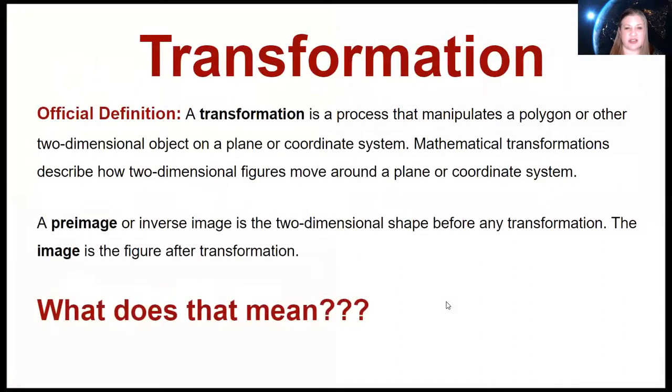So let's dig into a definition. The official definition of a transformation is a process that manipulates a polygon or other two-dimensional object on a plane or coordinate system. Mathematical transformations describe how two-dimensional figures move around a plane or coordinate system. A pre-image or inverse image is the two-dimensional shape before any transformation and the image is the figure after the transformation.